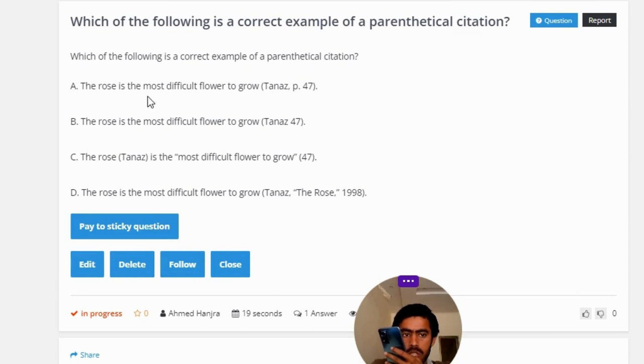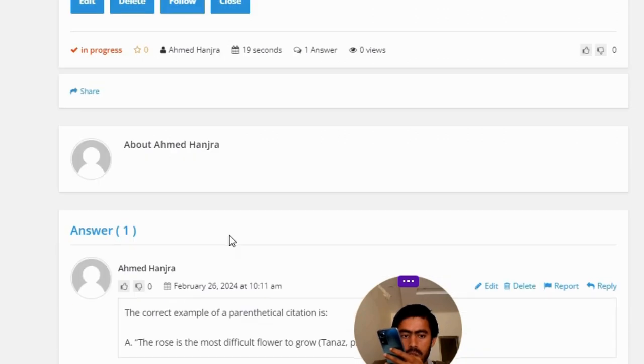Option B: The rose is the most difficult flower to grow (Tenors 47). Option C: The rose (Tenors) is the most difficult flower to grow (47). Option D: The rose is the most difficult flower to grow (Tenors, "The Rose", 1998).